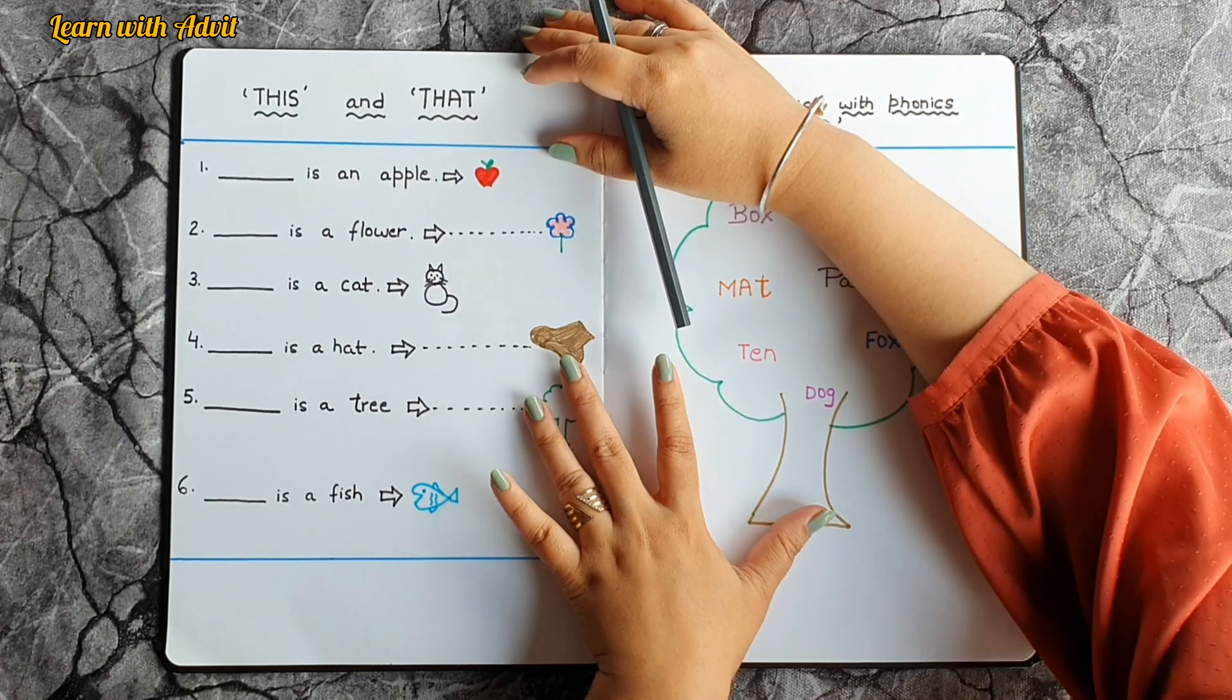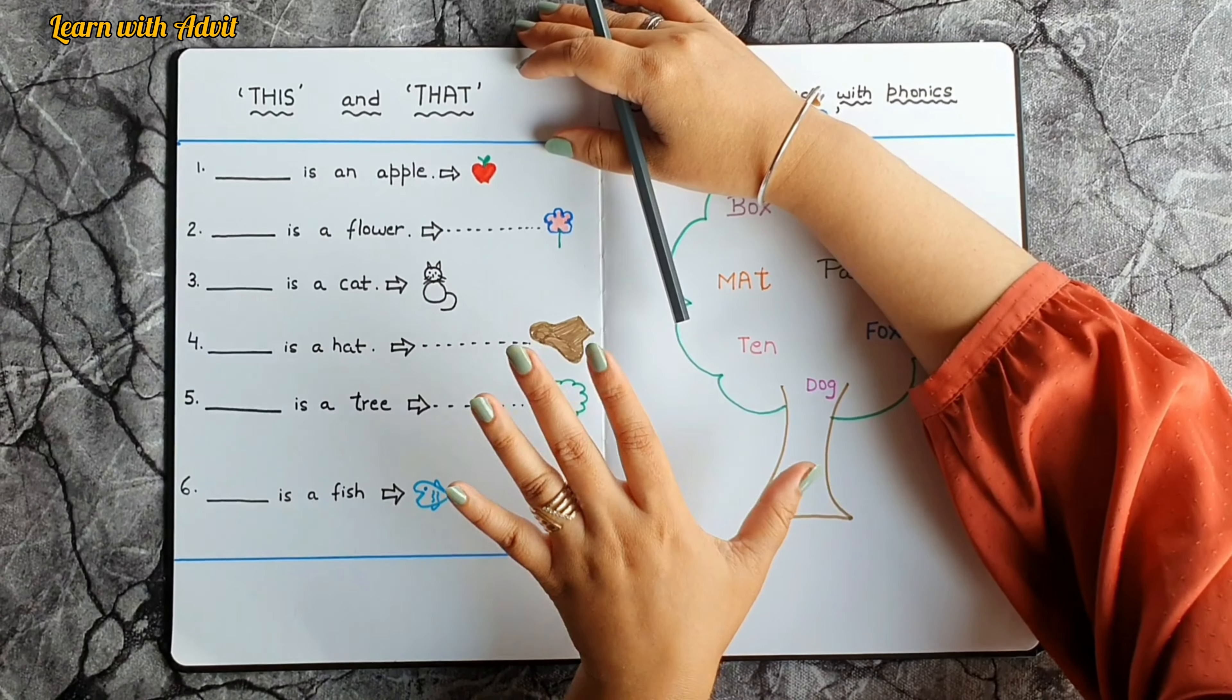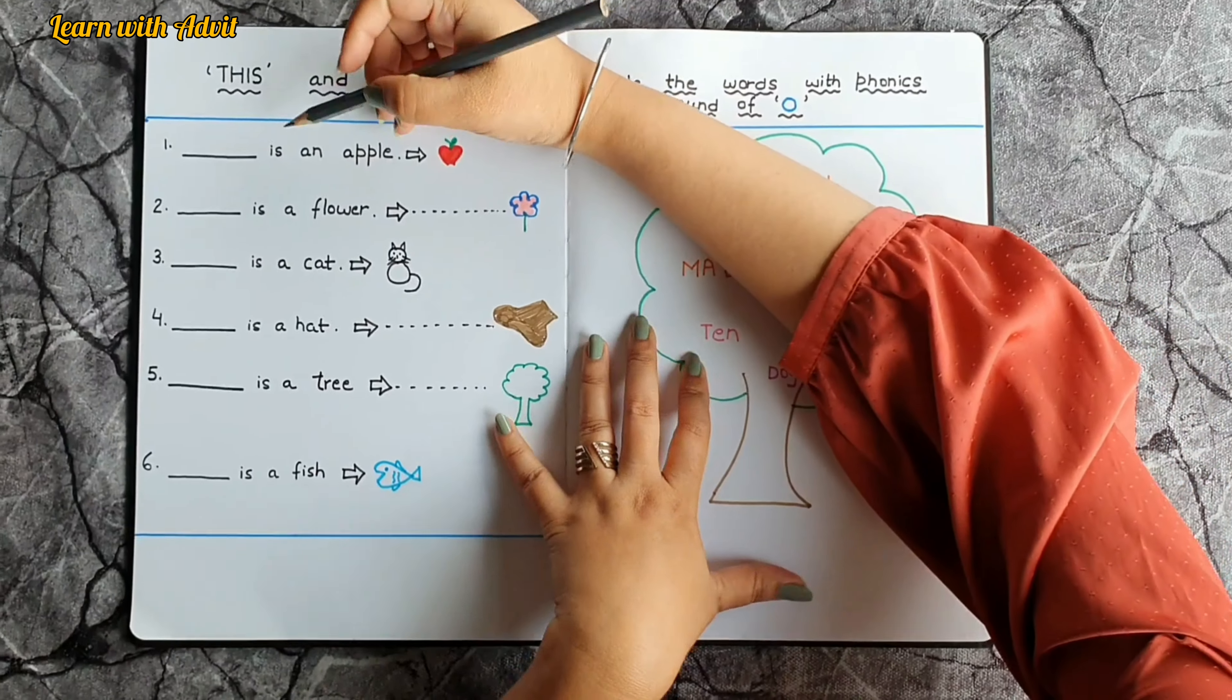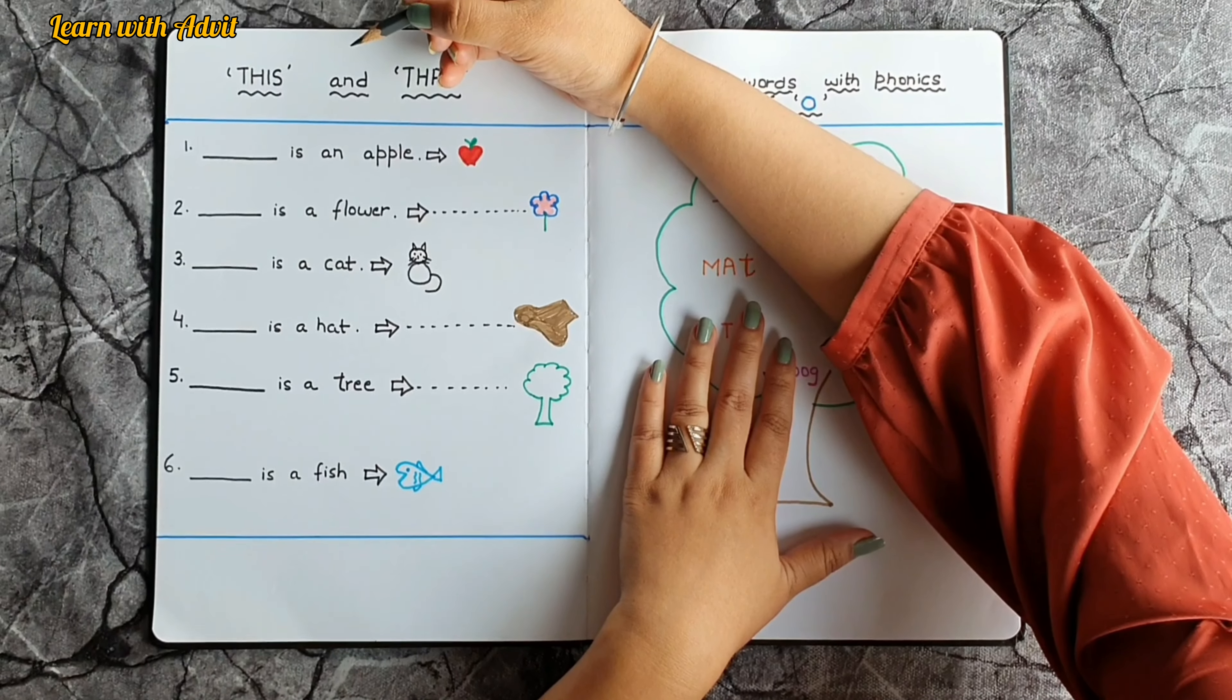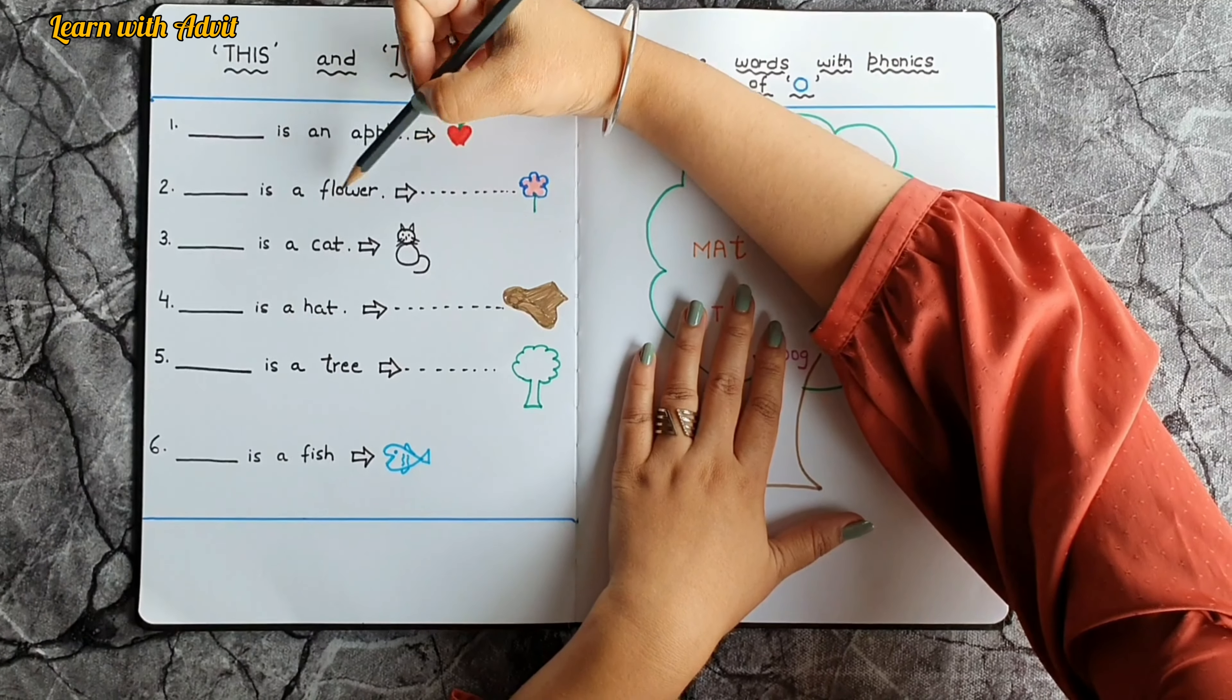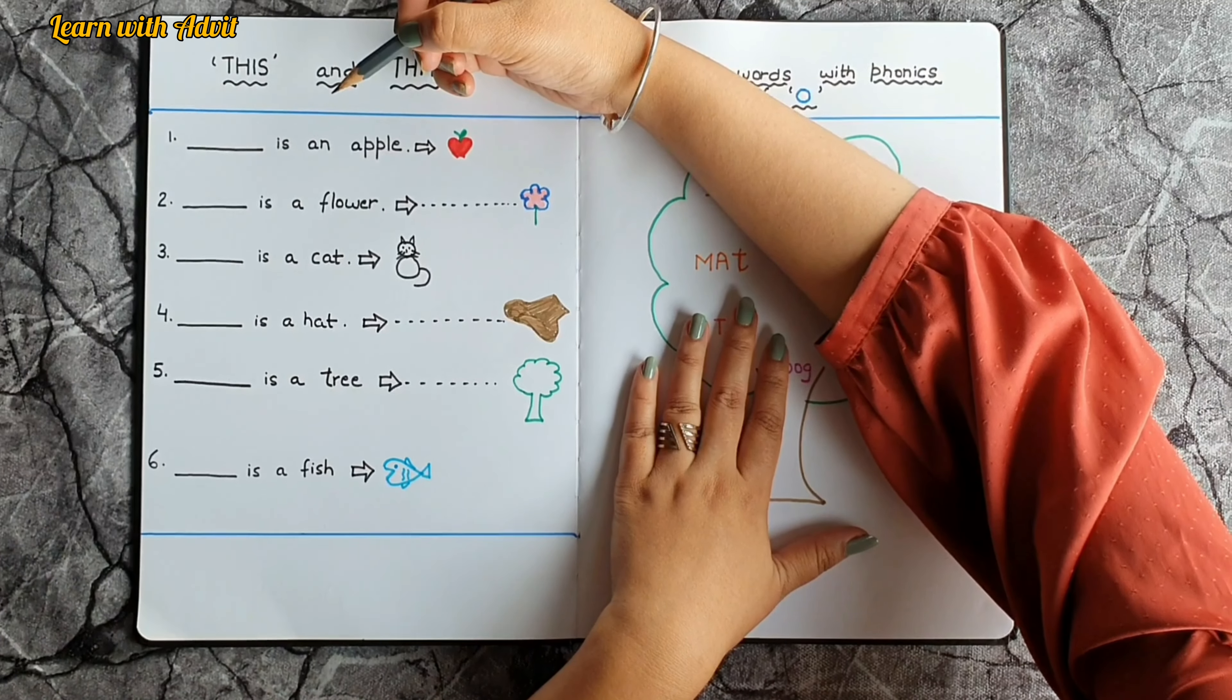In this sheet what you have to do, this is the sheet for this and that. I will tell you, the near things we are using 'this' and the things which are far we are using 'that'. Come on, tell me, is an apple? This is an apple. Why? Because apple is near to the arrow. Is a flower? That is a flower, yes. Why? Because flower is far away from the arrow, very good.